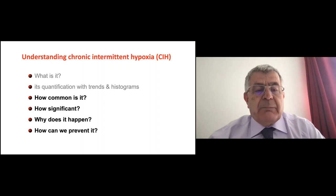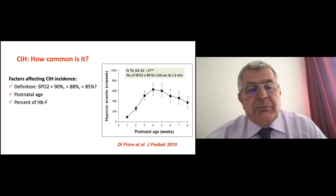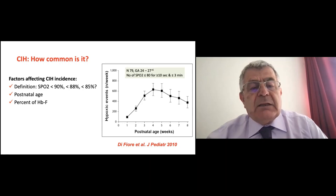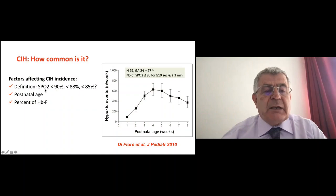How common is chronic intermittent hypoxia? The frequency depends on your definition. If we only capture those below 85%, we have less frequency than if our limit is 90 to 95 for extreme preterm babies. We might want to capture those below 88 or below 85 to call them chronic intermittent hypoxia. The definition affects the frequency.